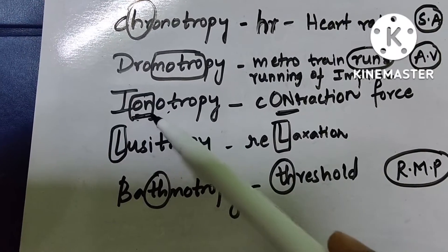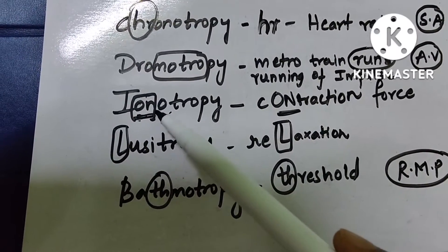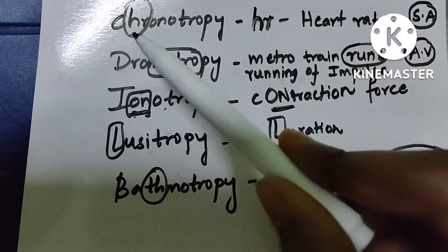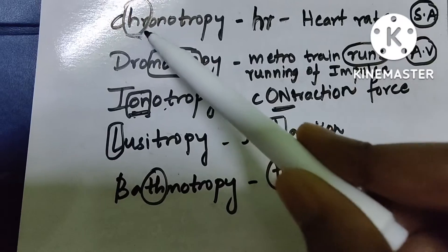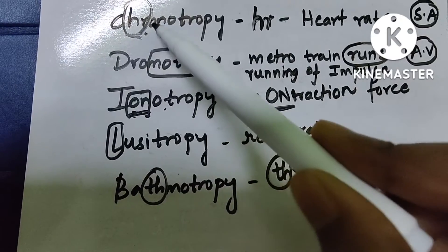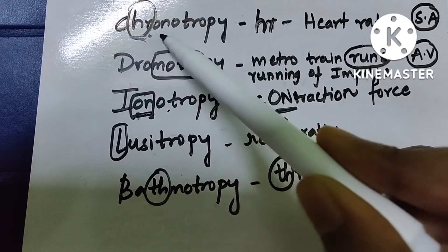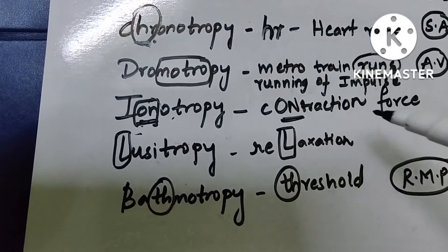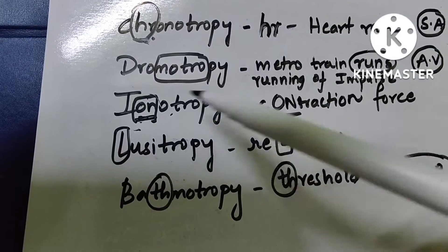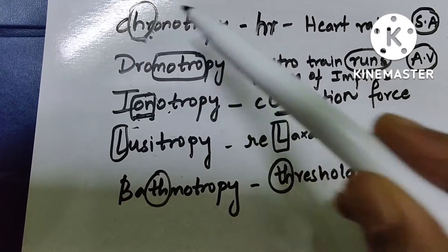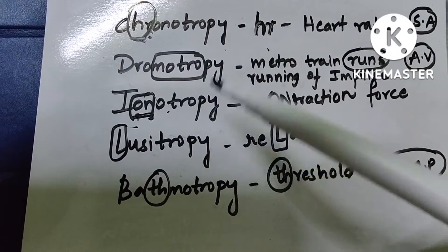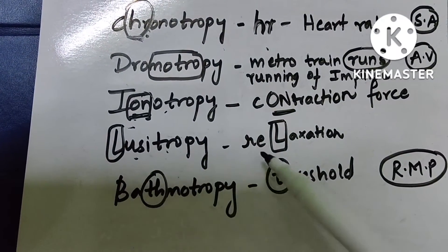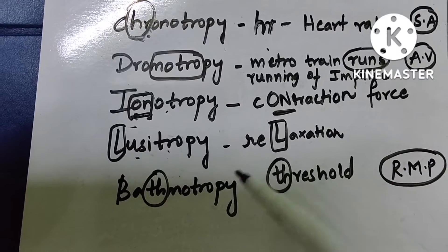Coming to inotropy — inotropy has 'ON' in it. In chronotropy you can find the mnemonic 'HR,' so don't confuse it with the 'ON' in inotropy. Inotropy has 'ON,' meaning contraction force. Whereas lusitropic is for relaxation.